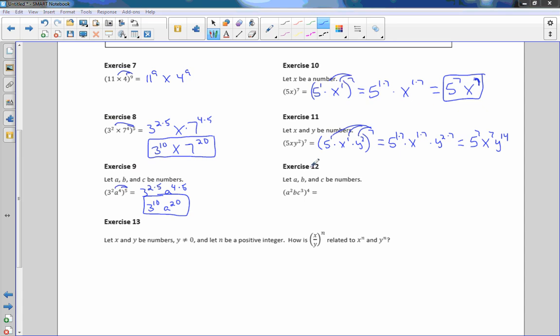Exercise 12. Let A, B, and C be numbers. A squared B, C to the 3rd. So I'm just going to write A squared B to the 1, C to the 3rd, just so you remember that there's a 1 with that B. Distribute, distribute, distribute. And this equals A to the 2 times 4, B to the 1 times 4, C to the 3 times 4. So my final answer is going to be A to the 8, B to the 4, C to the 12th.